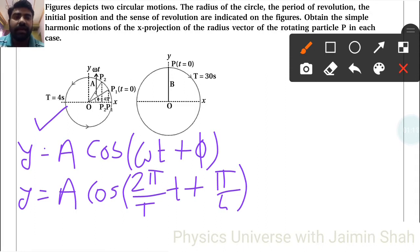So π by 4 that I have to write. So here A cos 2π upon T. T is given 4 seconds, so 4 and t, this small t, that small t value, T is equal to 1 second.